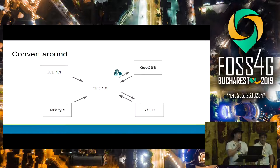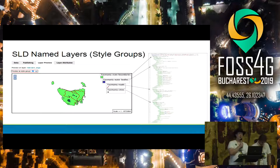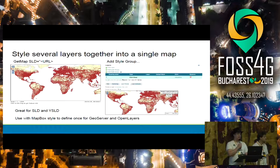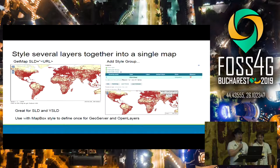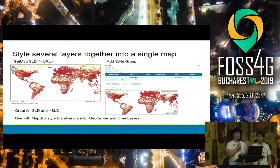There is limited support for converting from SLD to GeoCSS. One feature you might not be aware of: you can have an SLD that contains several named styles — an entire composition of map layers — and if you send that as an SLD parameter in the URL, you'll get that entire map drawn together. There's a style viewer toggle to preview as a style group, and this also works with YSLD and Mapbox style — a great way to have a single styling file that controls your data publication and how to draw it on mobile devices.